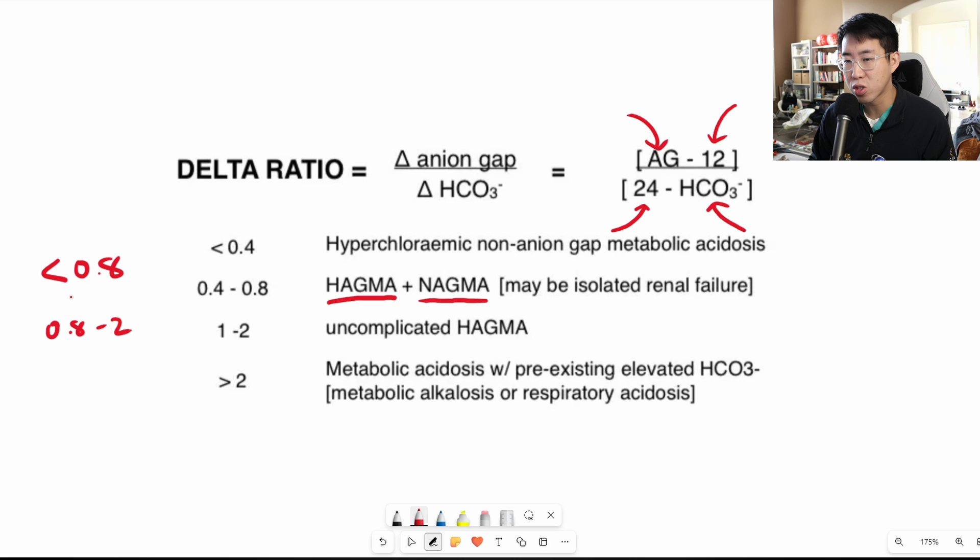From 0.8 to 2 is going to be telling you that the patient has a pure high anion gap metabolic acidosis.